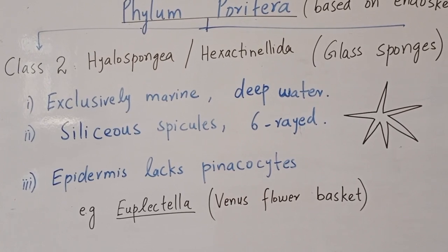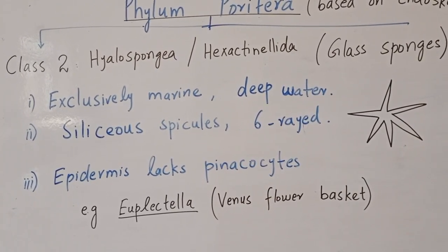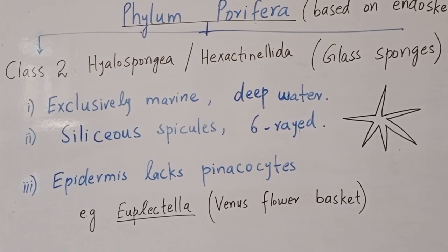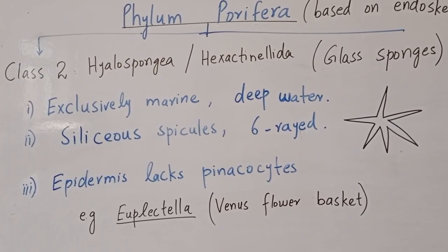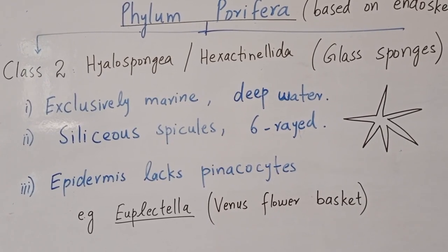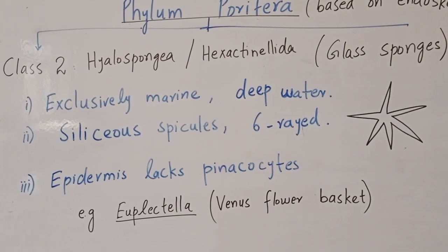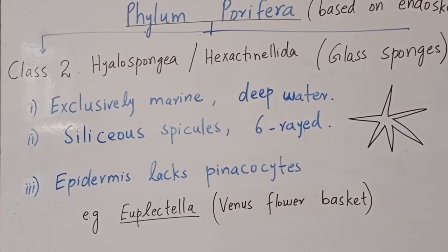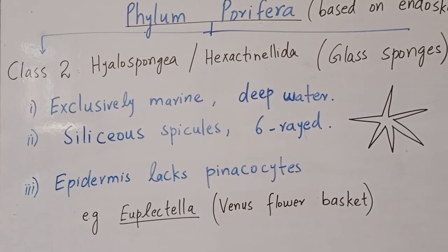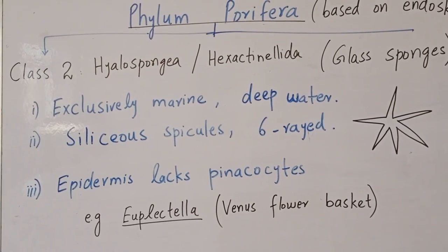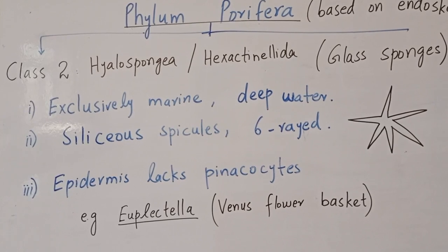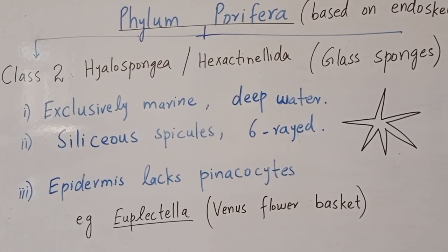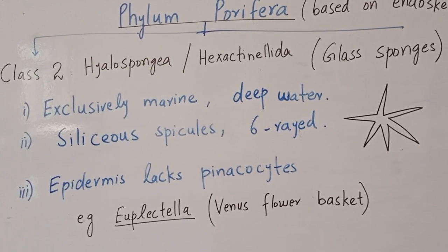The second class is Hyalospongia, also known as Hexactinellida. 'Hexa' means six, indicating that the spicules have six rays. Members of Hyalospongia are commonly called glass sponges, are exclusively marine, and are found in deep waters. The spicules are made up of silica, making them siliceous spicules, with six rays — hence the name Hexactinellida. There are no spongin fibers in this class.